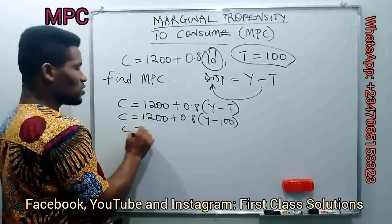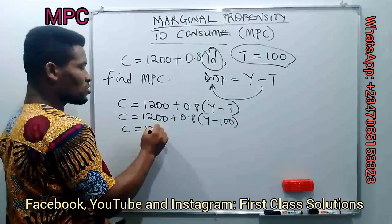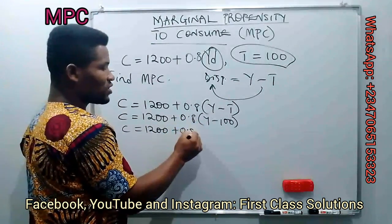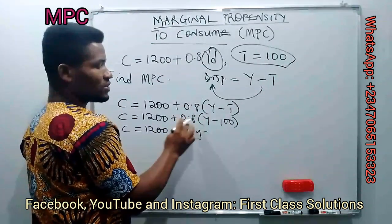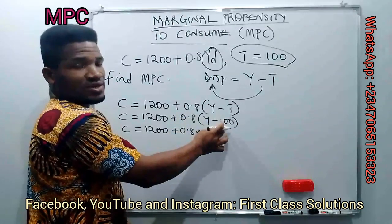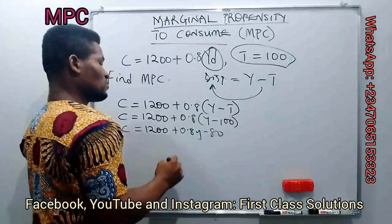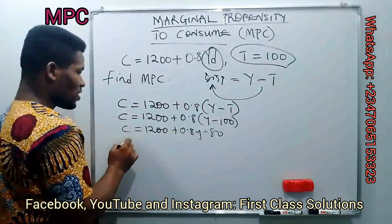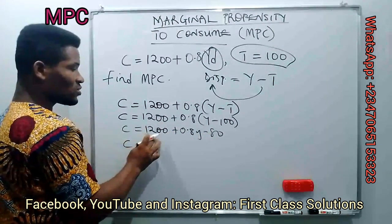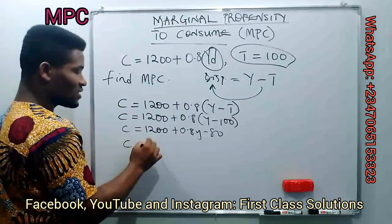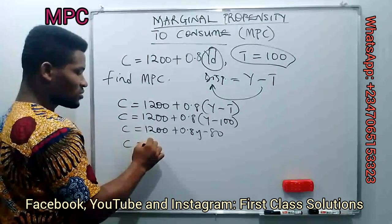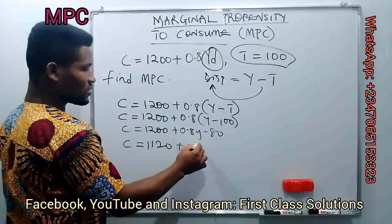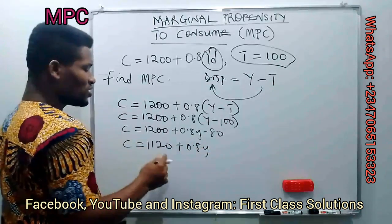We go forward to expand these brackets: C = 1200 + 0.8Y minus 0.8 times 100, which gives us 80. Collecting like terms, 1200 minus 80 gives us 1120, so we have C = 1120 + 0.8Y. We already have our consumption function as a function of Y.